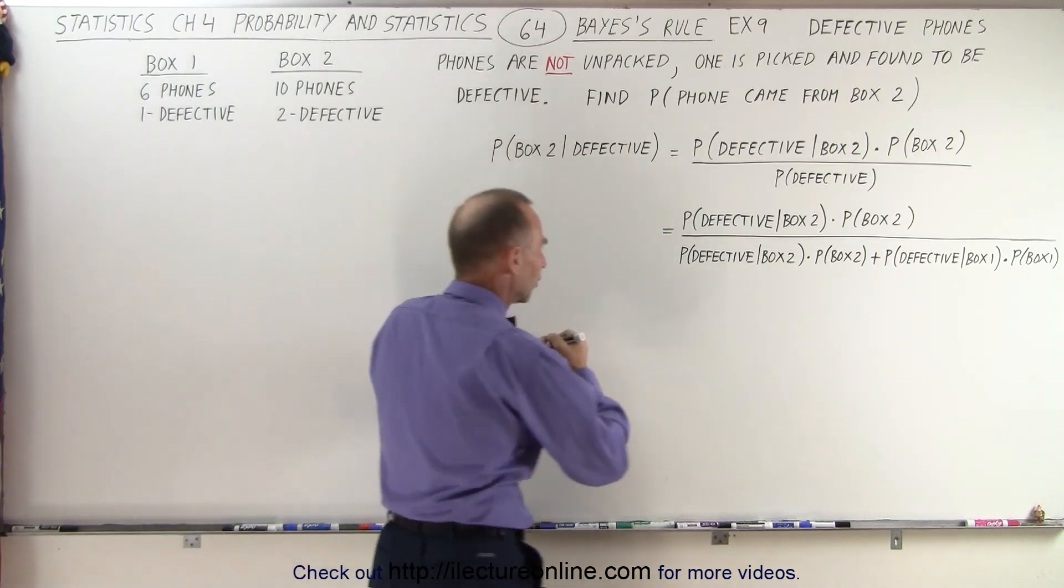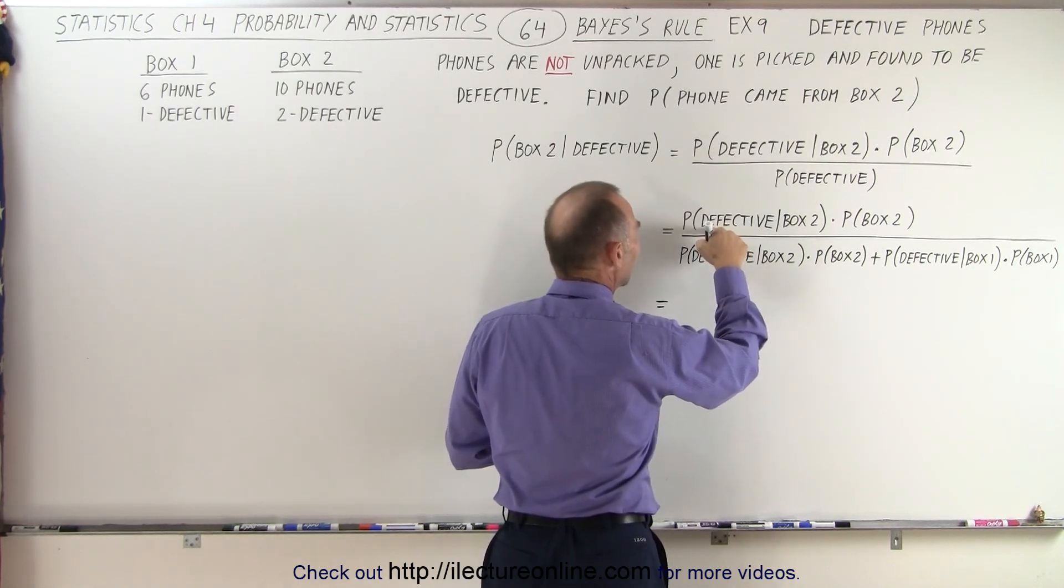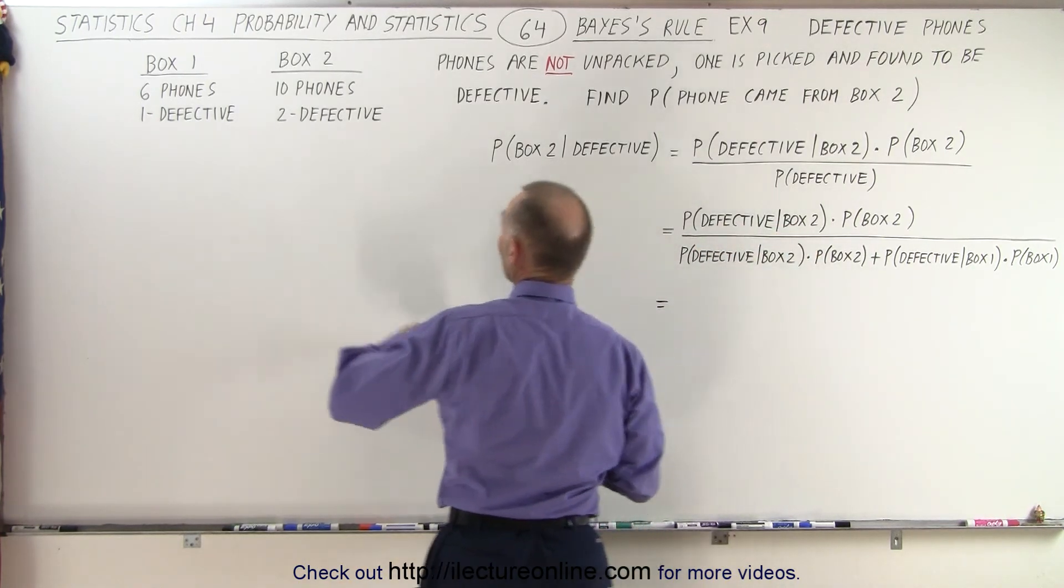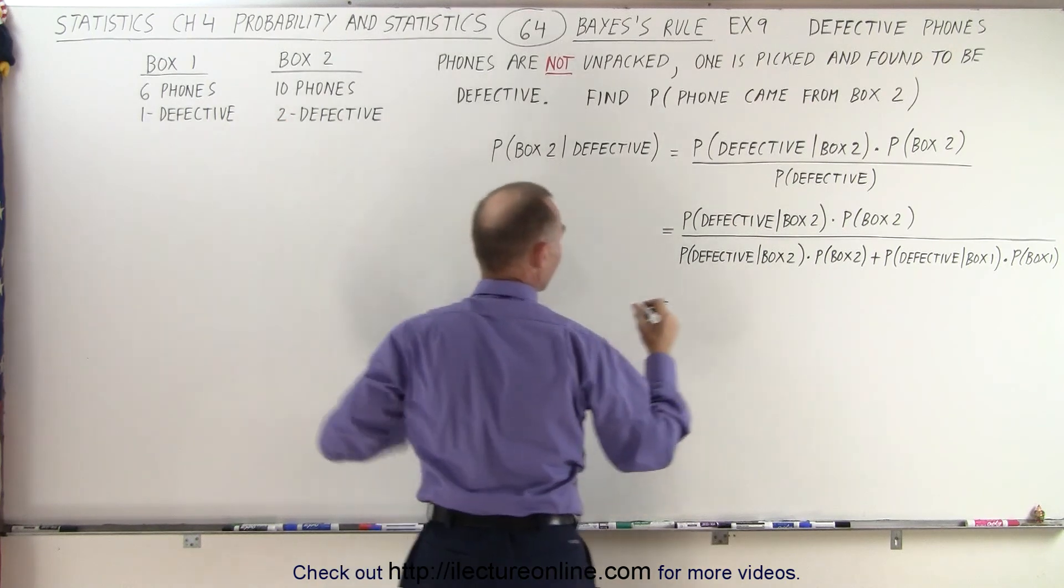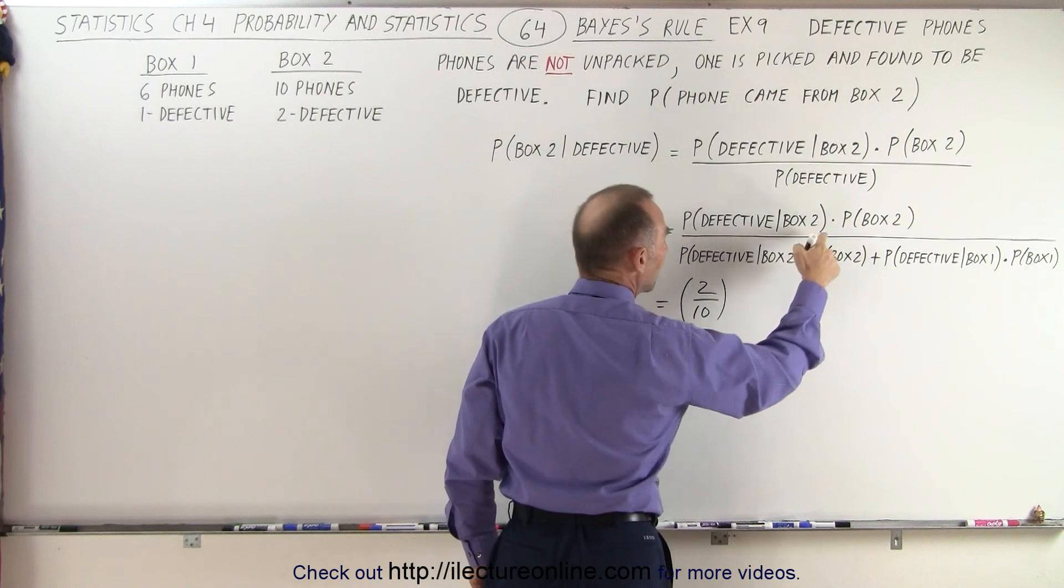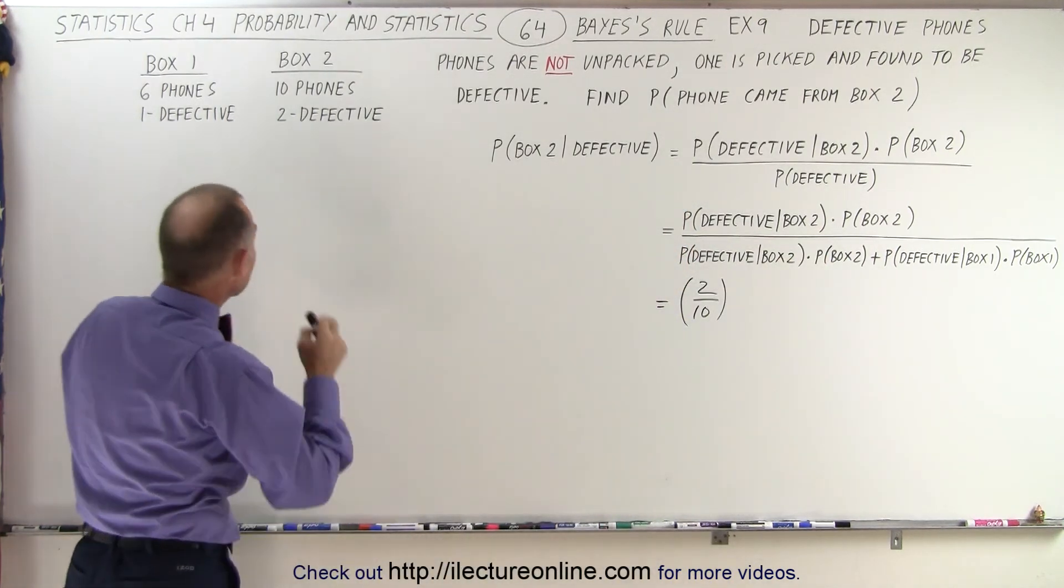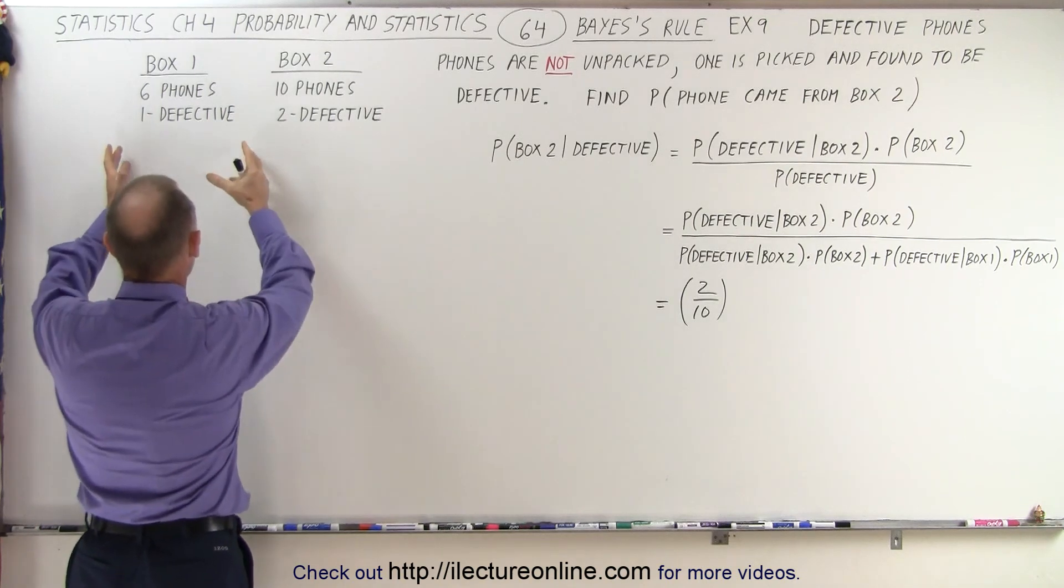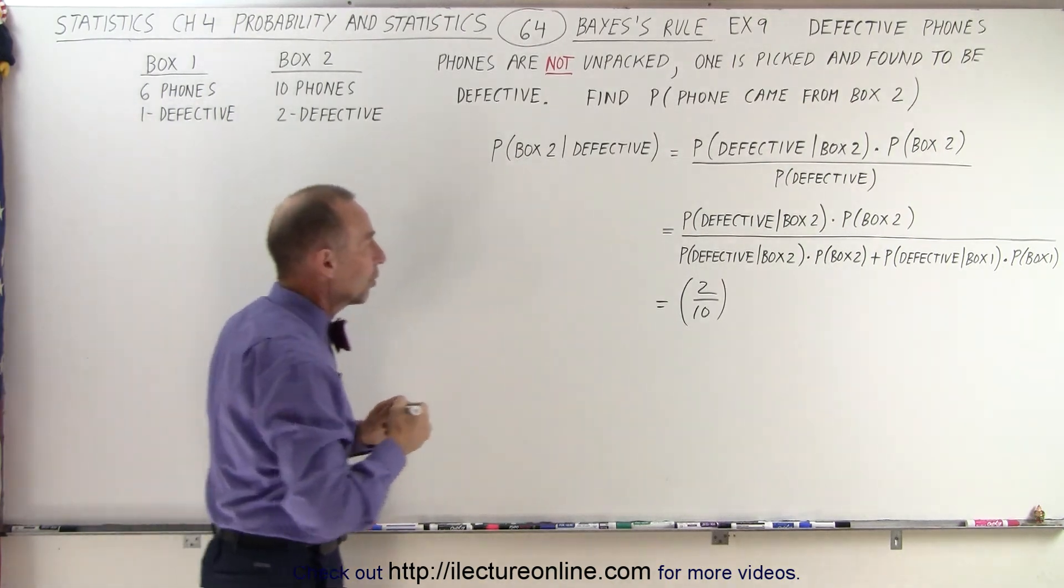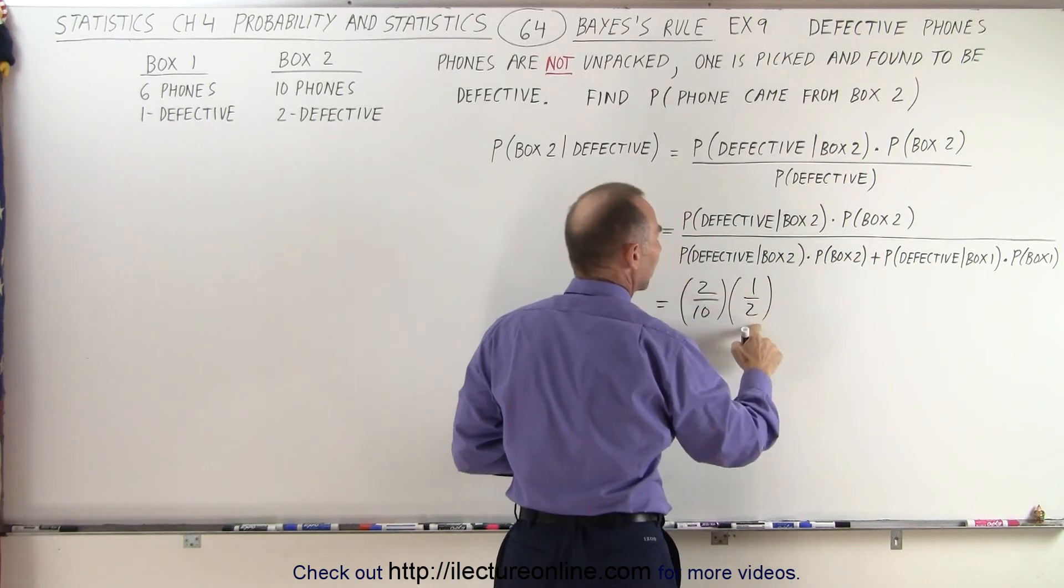So the numbers will look as follows. This is equal to the probability that the phone is defective if we picked it from box two. Again, there's ten phones total, so that's still two out of ten. But now, what is the probability that we picked it out of box two? Well, we have an equal probability that we picked the first box or that we picked the second box. So it's a 50% probability or one half that we picked box two.